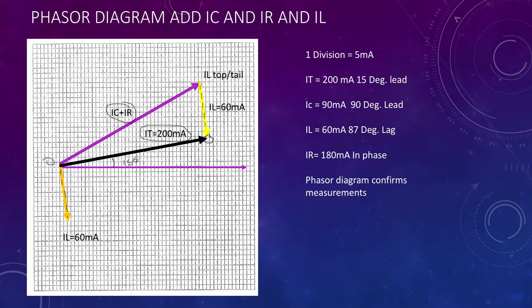Our total current, even though we're able to measure it at 200 milliamps, we now know is at 15 degrees and it leads the reference or leads the voltage.